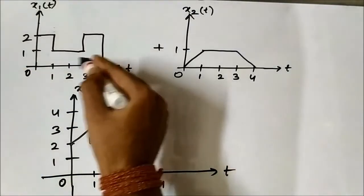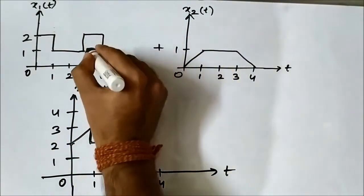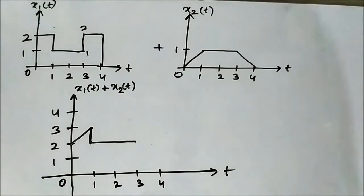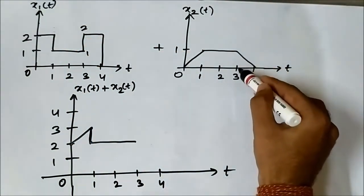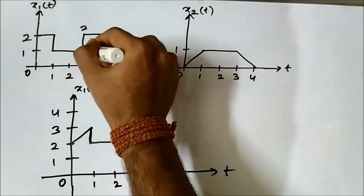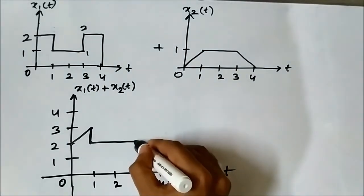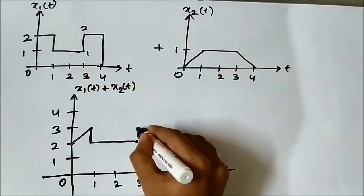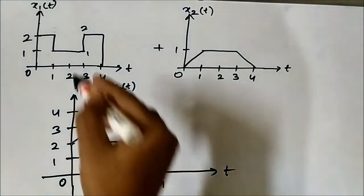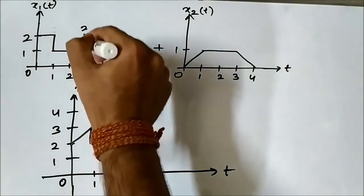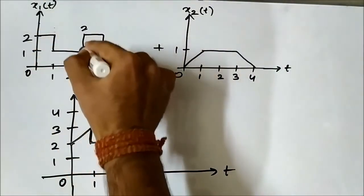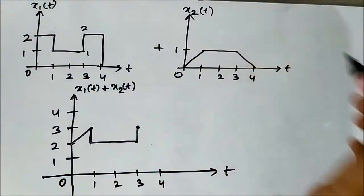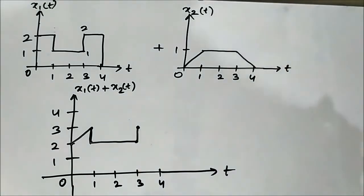At t equals 3 there is an upward transition from 1 to 2 in x1(t) — it rises almost instantly. At t equals 3, x2(t) has a fixed value of 1. For the initial value 1 of x1(t), adding 1 gives 2. For the final value 2 after the upward transition, adding 1 gives 3. So at t equals 3 we consider both values 1 and 2 for x1(t), but x2(t) is fixed at 1.